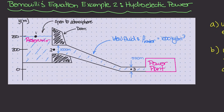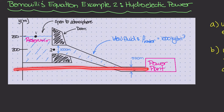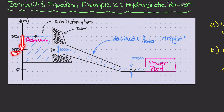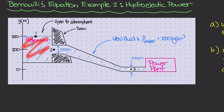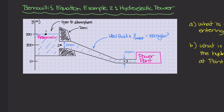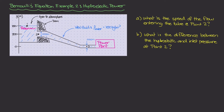Looking at the diagram more closely: the top of the reservoir is at 250 meters above the datum. The power plant at point three is at the datum, elevation zero. Point two is about 50 meters below the reservoir surface, at elevation 200 meters. The pipe is circular — diameter 100 centimeters at point two, and 50 centimeters at point three. We'll model this as an ideal fluid with mass density 1000 kg/m³.